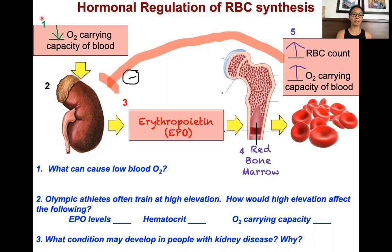Let's start with step one. If your body is sensing that the oxygen levels the blood is carrying is below the metabolic demand — below the need of the body — this lower oxygen carrying capacity is going to be the stimulus, which then turns on the endocrine gland at step two.